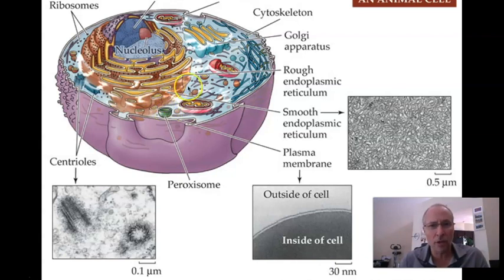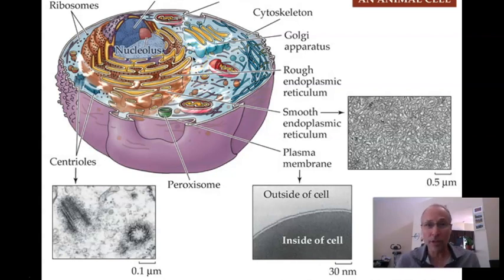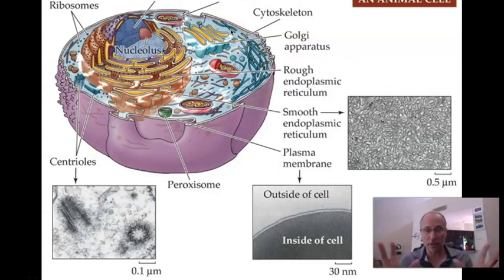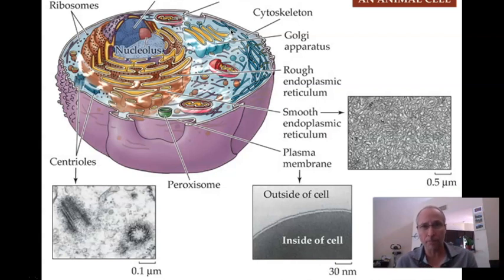It could be a peroxisome, a lysosome, or any other type of vesicle containing proteins to be processed — these then go to the Golgi apparatus. The Golgi apparatus processes them some more, and then they get released elsewhere. There's nothing I'm teaching you right now that we haven't actually already seen.